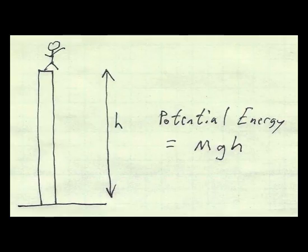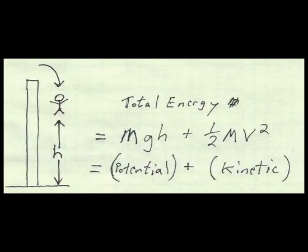The next thing to think about is potential energy. Suppose you're standing on top of a building, then your potential energy relative to the ground is your mass times the gravitational constant times your height above the ground. Now suppose you jump off the building, then your potential energy decreases as h decreases. And what you lose in potential energy you gain in kinetic energy, which is defined as one half mass times velocity squared.